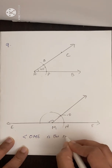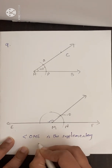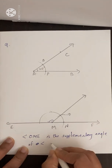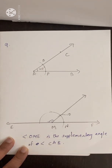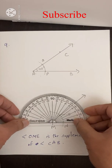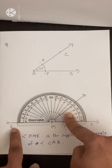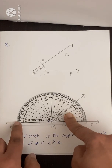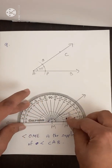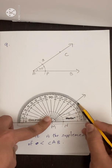Angle OME is the supplementary angle of angle CAB. You can use your protractor to check — keep the zero line along ray ME and start from zero. You can see the ray MO is passing through 140 degrees, confirming the result.